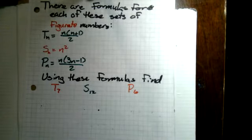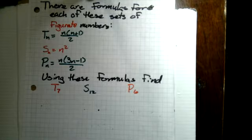There are formulas for each of these sets of figurate numbers. T sub n is equal to n times n plus 1 over 2. S sub n equals n squared and P sub n equals n times 3n minus 1 over 2. So using these formulas, I want you to find the values of T sub 7, S sub 12, and P sub 6. Take a few seconds, pause the video if you need to, and we'll look at this in a little bit.